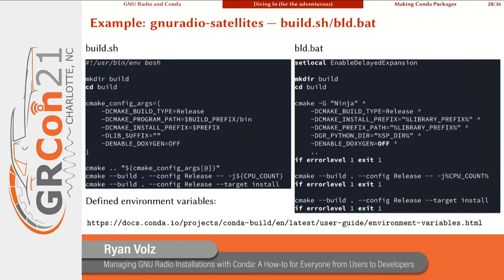The other half of the recipe is the build scripts. You can see it's your typical steps when building from source: you make a build directory, call CMake, and in this case we have to pass some particular arguments for installing and building into a conda environment. Then you do your standard build and install steps. You'll notice these scripts use environment variables that have been defined ahead of time by conda-build. Search for `conda build environment variables` and that'll tell you everything you need to know about that.